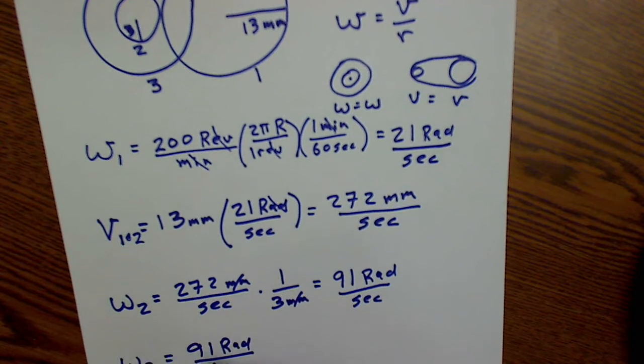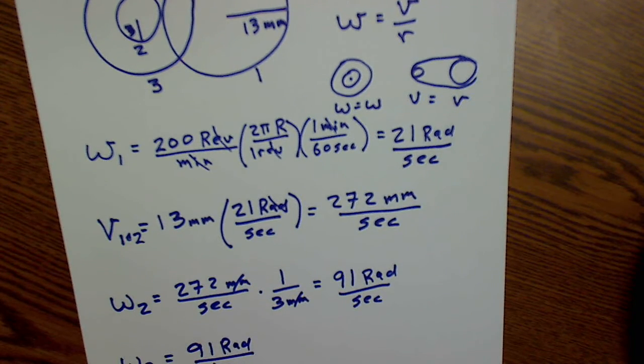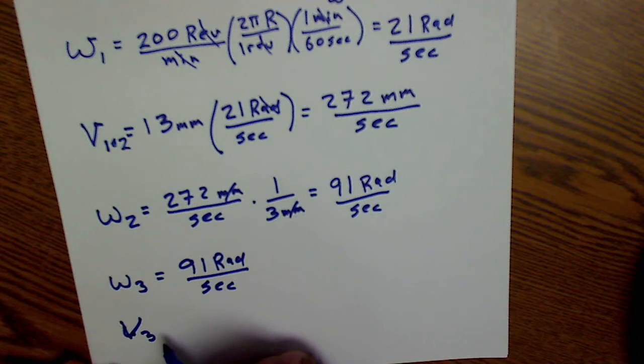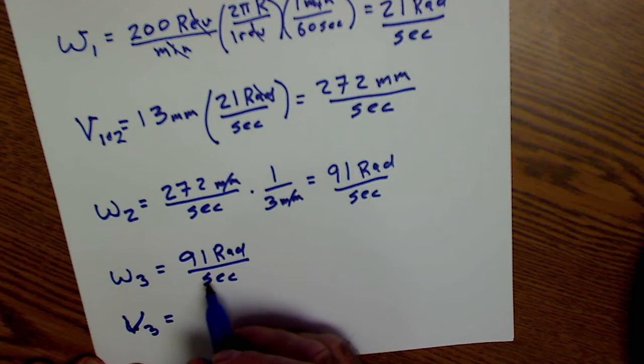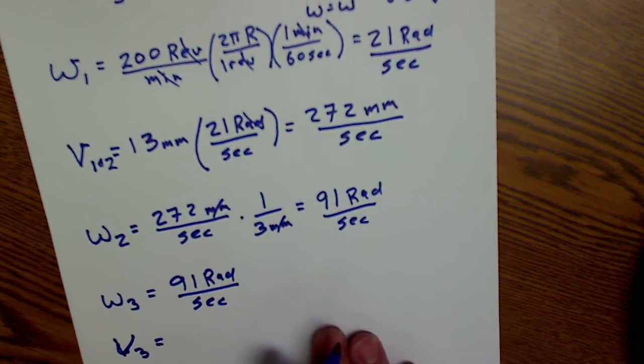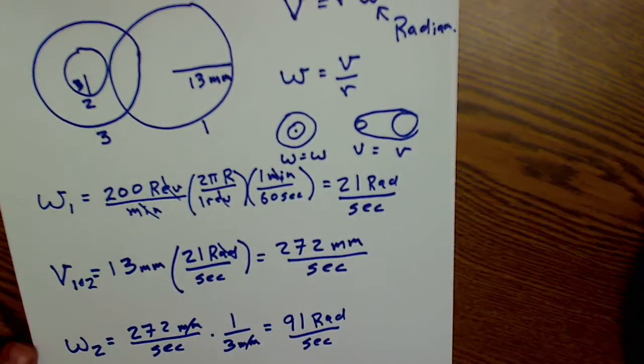If I want a linear velocity of gear three, linear velocity of gear three would be its angular velocity times this radius. So there's an angular and linear velocity problem.